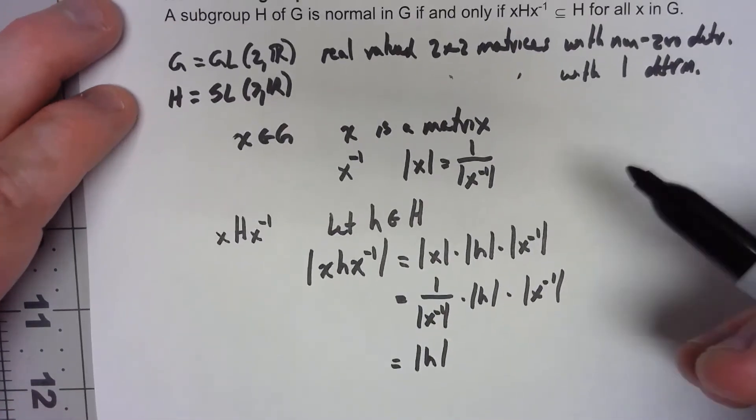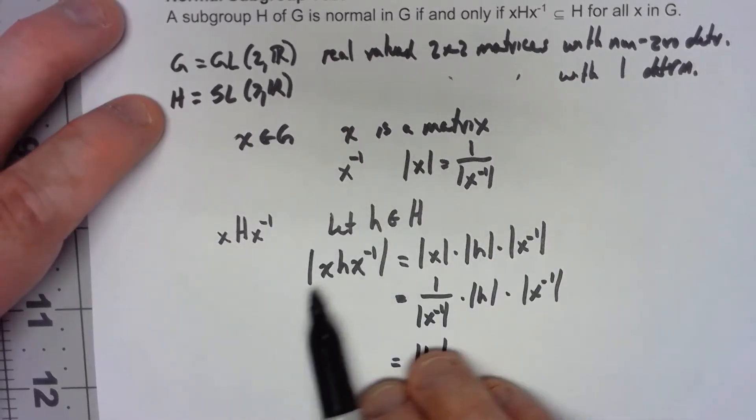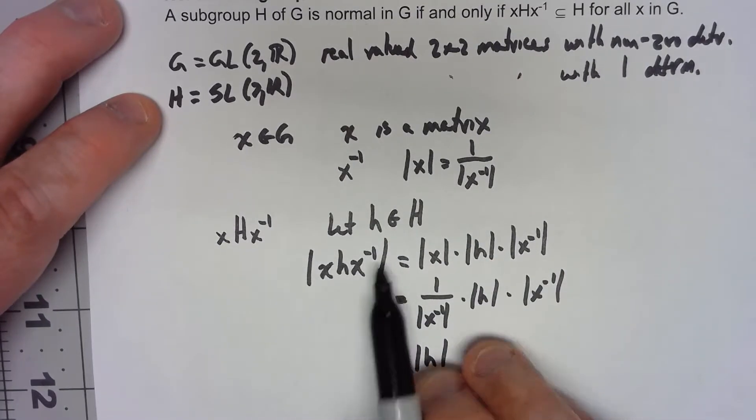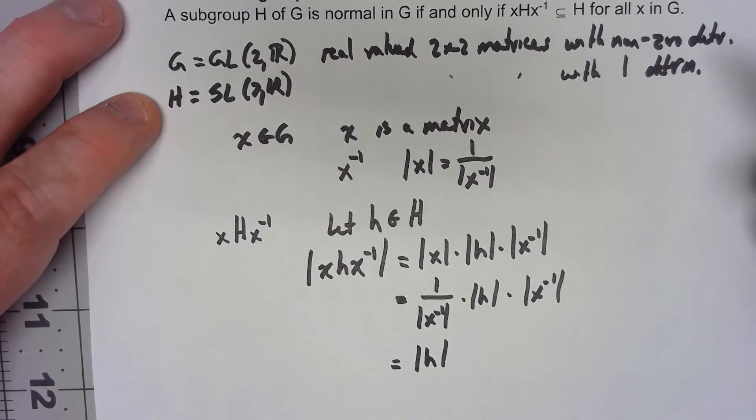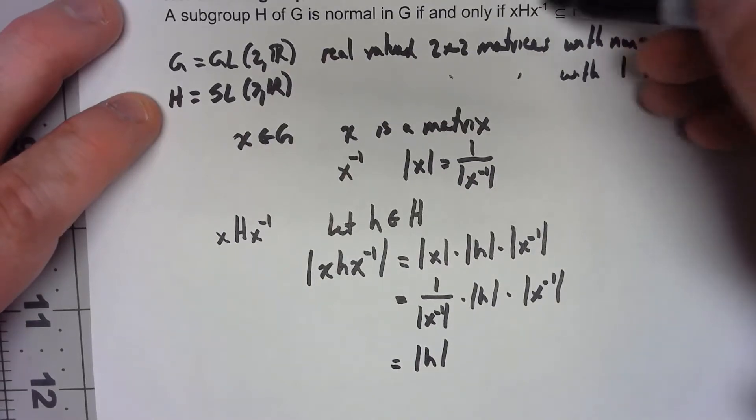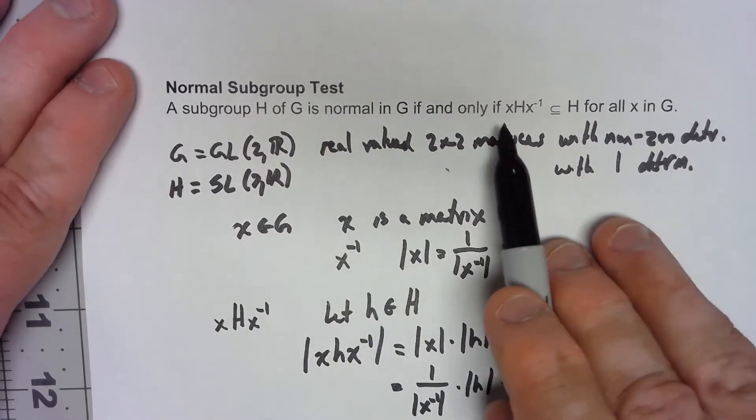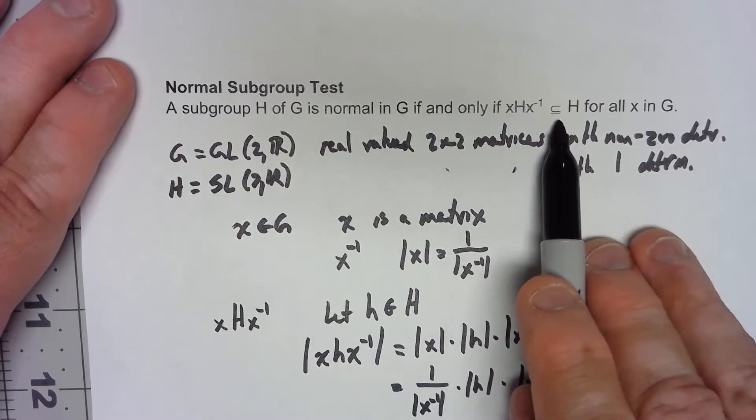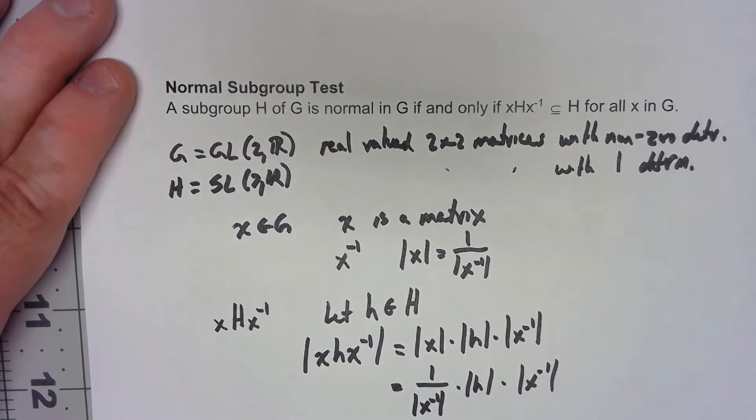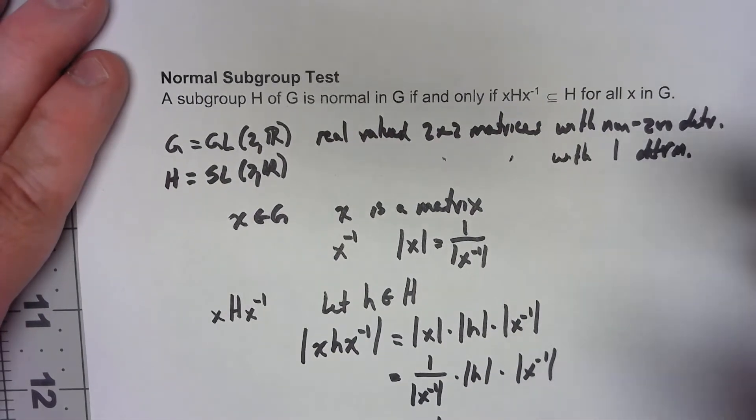There we've got it, so for any h in H, when I do this XhX inverse, I get another element of H. So that tells us XHX inverse is a subset of H. And then we have it, so H must be normal in G.